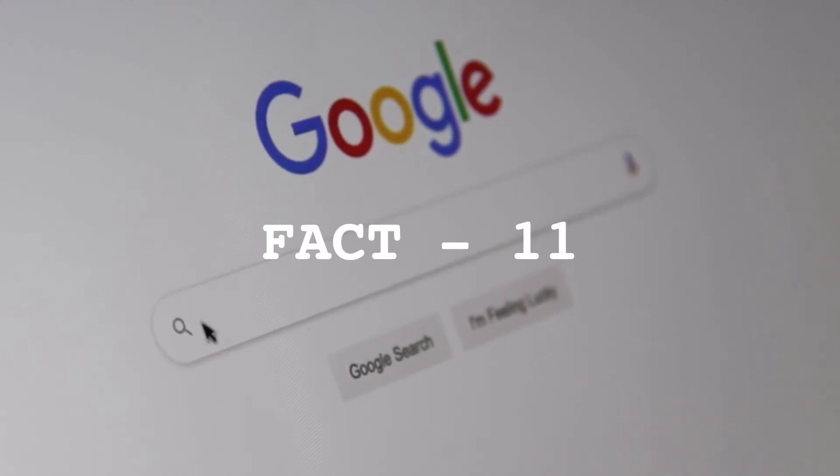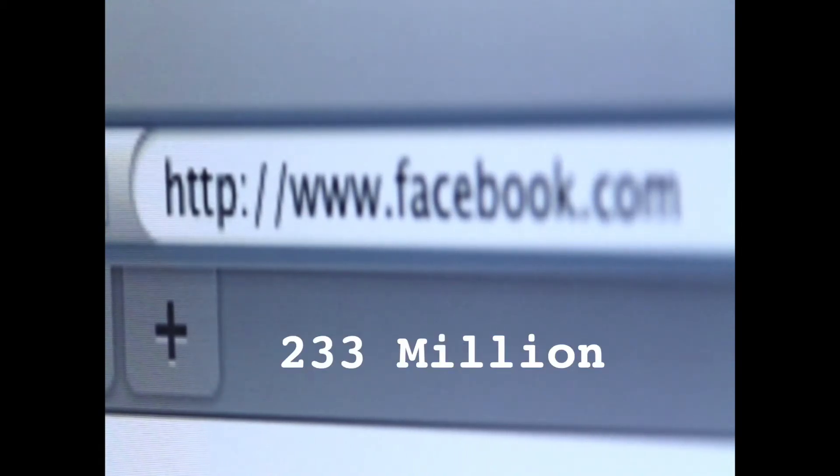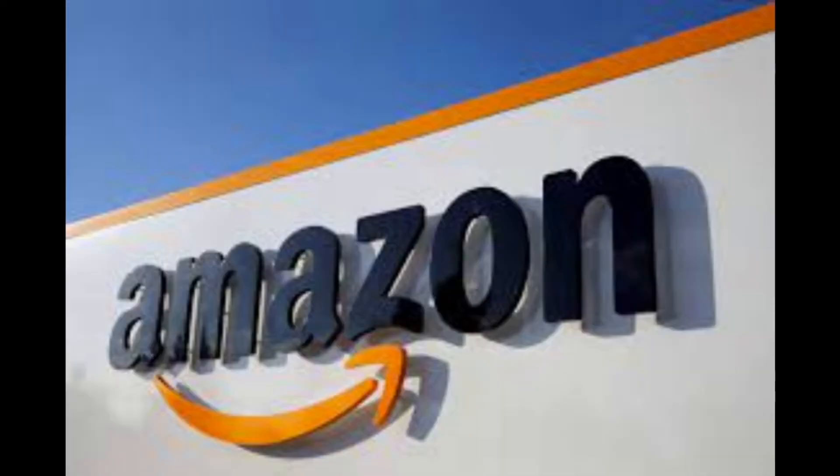There are over 35 billion Google searches each month. In May 2019, the top three most Googled words were Facebook at 233 million searches, YouTube with 194 million searches, and Amazon with 103 million searches.